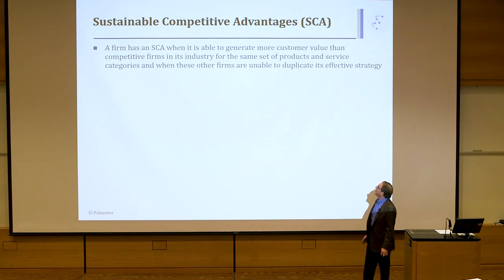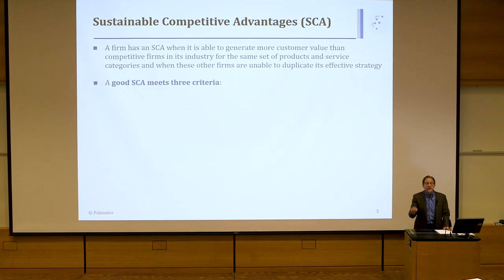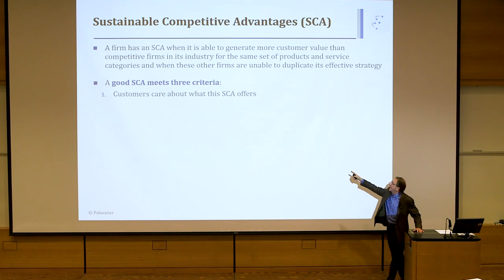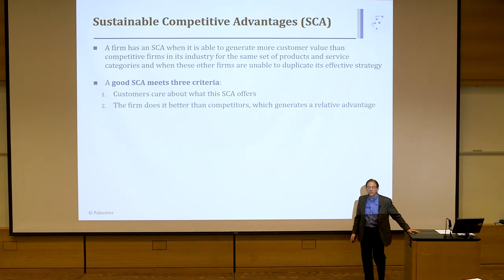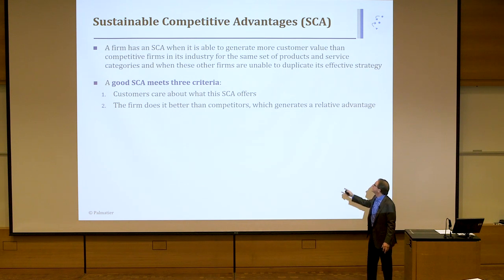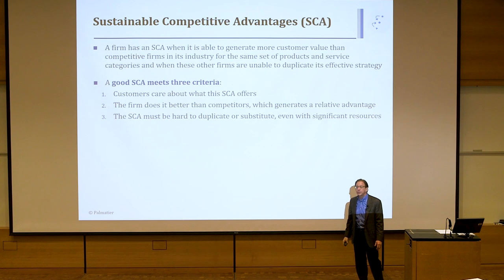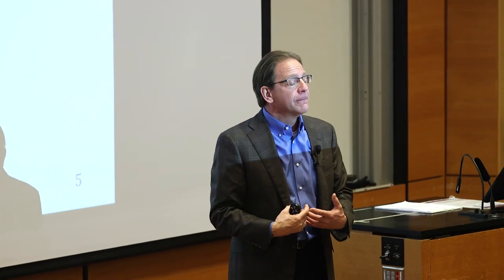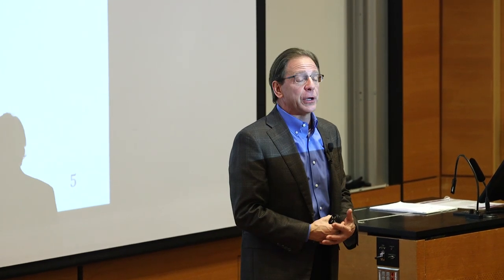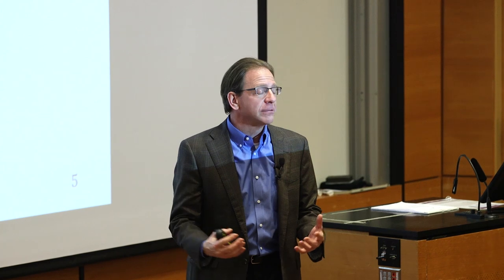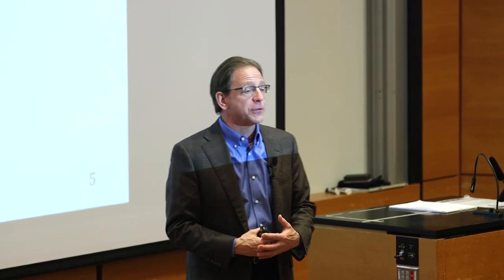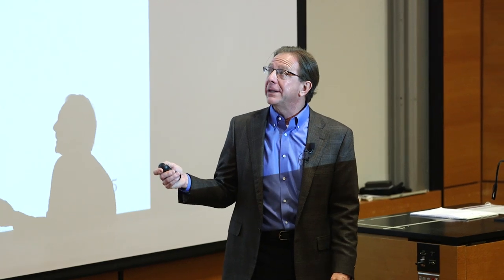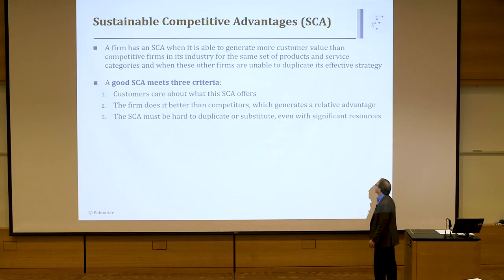A firm has an SCA when it's able to generate more customer value than competitive firms in an industry with the same set of products. A good SCA must meet three criteria: customers must care about it; the firm has to do it better than competitors, which generates a relative advantage; and third, it must be hard to duplicate or substitute. If you do the first two — customers care and you build a relative advantage — but competitors can copy you, they'll just do the exact same thing you're doing, maybe at a little lower price. It has to be hard to duplicate. Very often, hard to duplicate is the most difficult part of an SCA.